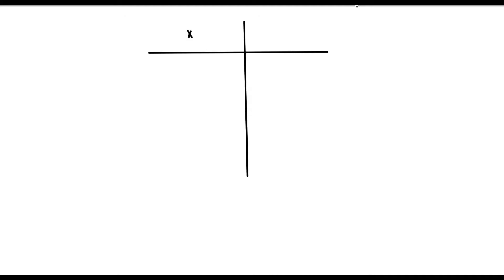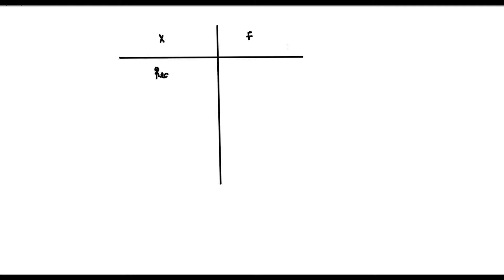Let's have a sketch of the table. We have X, which represents the variable of interest — which is color in this case — and then we have the frequency. So we have red, we have blue, we have black, and then we have pink. The distribution says that we have a total of 5 students who like red, a total of 10 students that like blue, a total of 3 students that like black, and a total of 7 students that like pink.